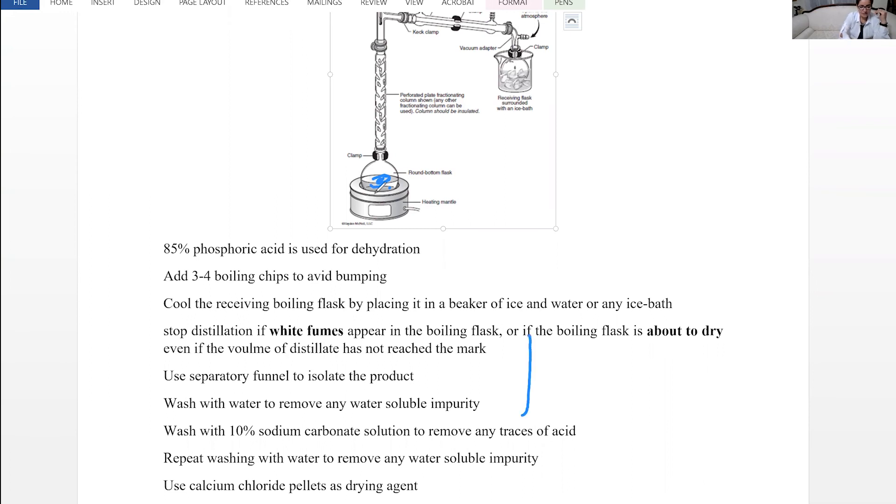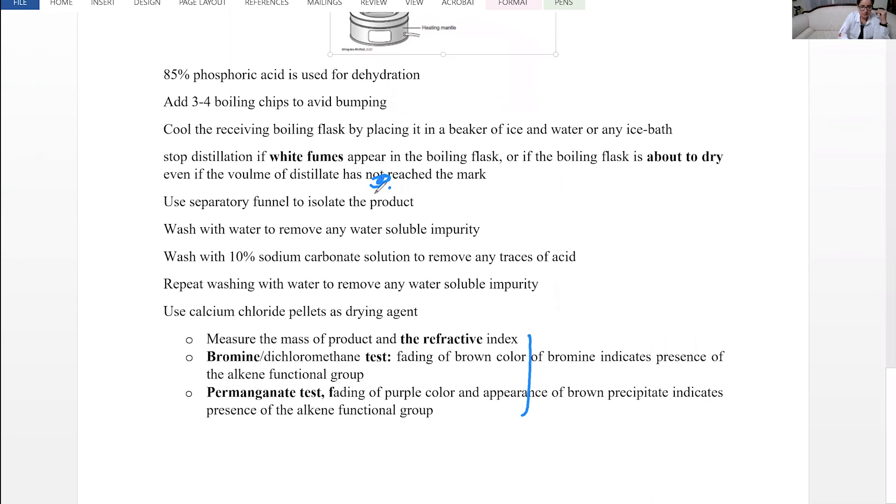Separatory funnel is used in this experiment to clean up the product. The product is washed with water to remove any water-soluble impurities, washed with sodium bicarbonate, and washed with water again. Sodium bicarbonate would remove any trace of acid. To dry the sample, calcium chloride pellets is going to be used. After the sample is dry, measure the mass and refractive index to calculate percent yield and confirm purity.